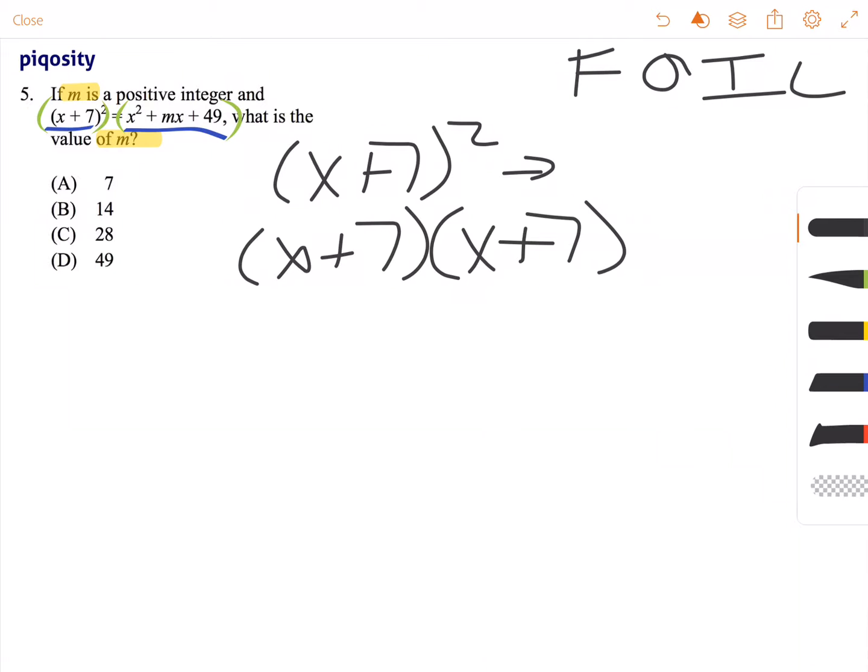Okay, so let's start with first. So first are the two x's, the two first values in this expression. So multiplying those two together, x times x is equal to x².